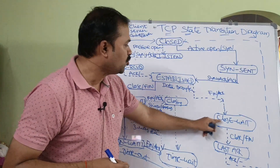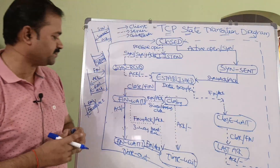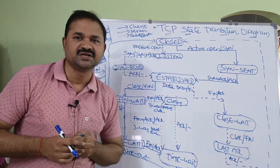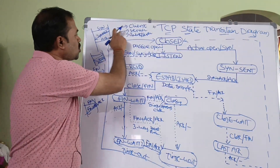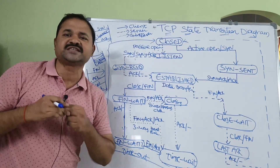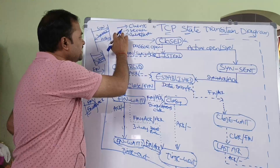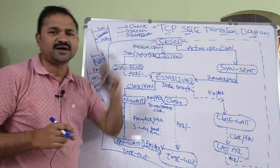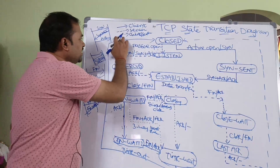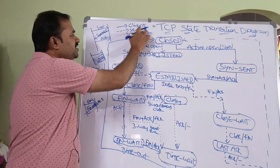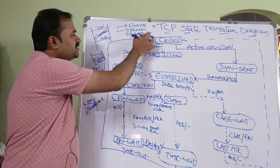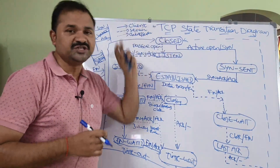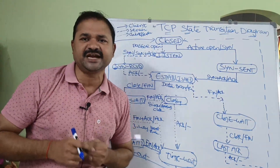For client transitions we use a solid black line. For server transitions we use a dashed line. For transitions that apply to either client or server, we use a dotted line.